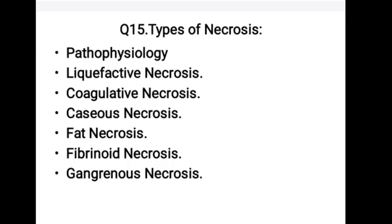Question number 15: Types of necrosis. Necrosis is the death of tissue. It occurs when too little blood flows to the tissue, which can result from injury, radiation, or chemicals. Necrosis cannot be reversed. When large areas of tissue die due to lack of blood supply, this condition is called necrosis. Common causes include injury, infection, disease, lack of blood supply to tissue, or extreme environmental conditions.